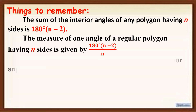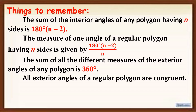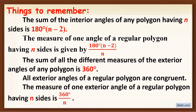The sum of all the different measures of the exterior angles of a polygon is 360 degrees. All exterior angles of a regular polygon are congruent. The measure of one exterior angle of a regular polygon having n sides is 360 degrees over n.